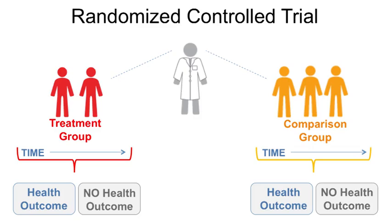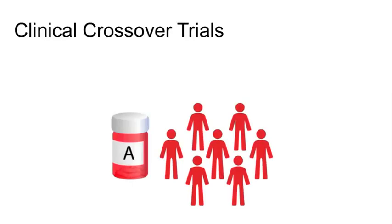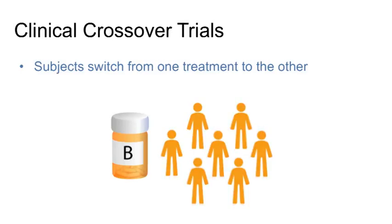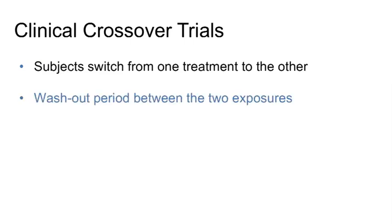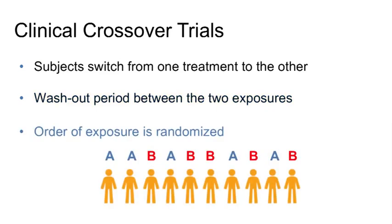Now we will discuss another type of experimental study design known as the crossover clinical trial. In a clinical crossover study design, subjects switch from one treatment to another after a certain period of time — they cross over to the other treatment or exposure. As we don't want the effect of the first treatment to carry over when a person switches to another treatment, there is usually a period in between the two exposures called a washout period when no treatment or exposure is given. The order that the exposure or treatment is given is randomized.